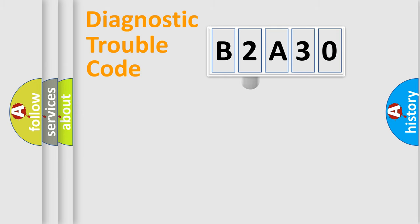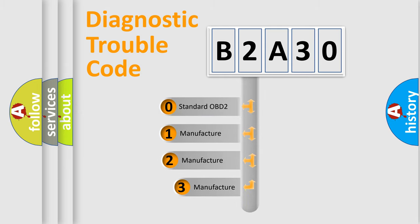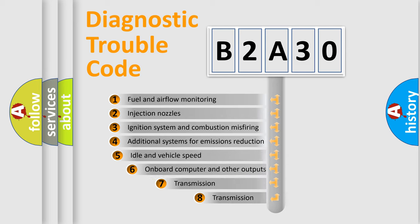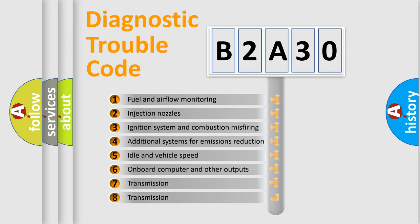This distribution is defined in the first character code. If the second character is expressed as zero, it is a standardized error. In the case of numbers 1, 2, or 3, it is a manufacturer-specific error. The third character specifies a subset of errors.